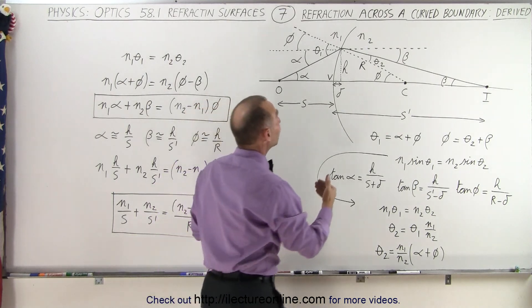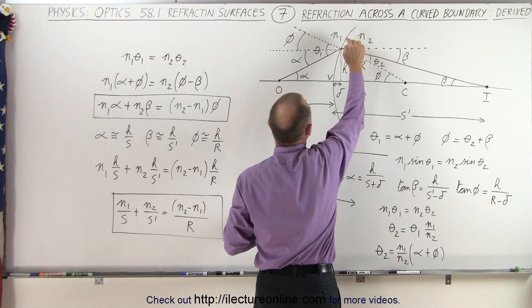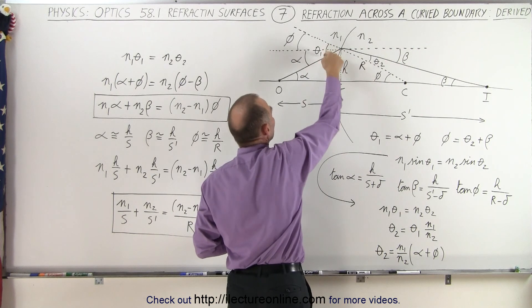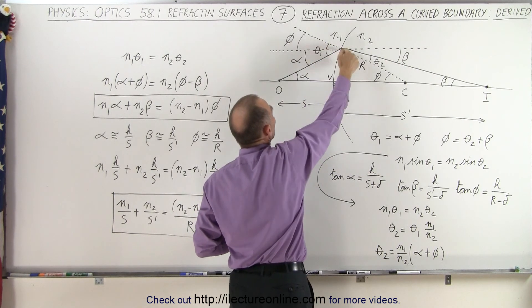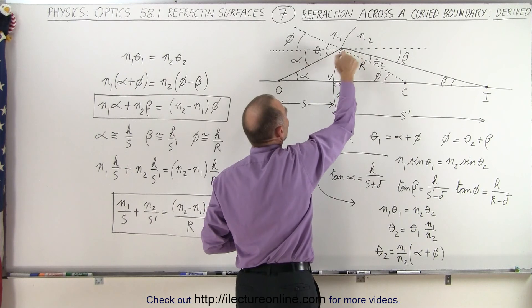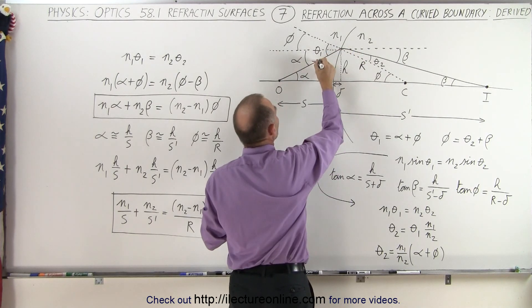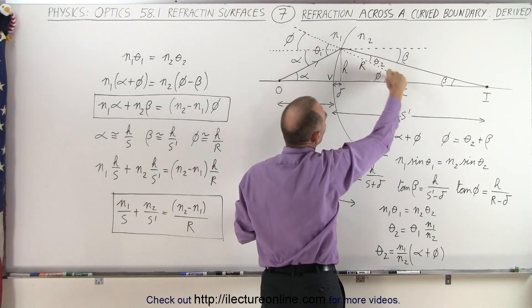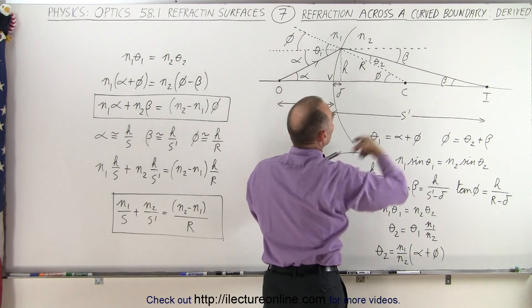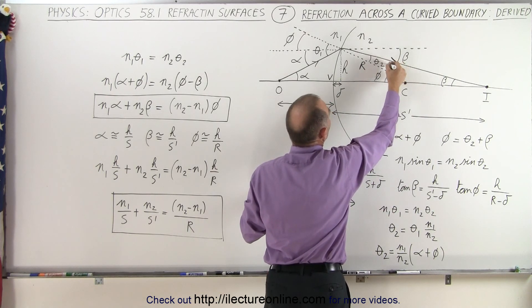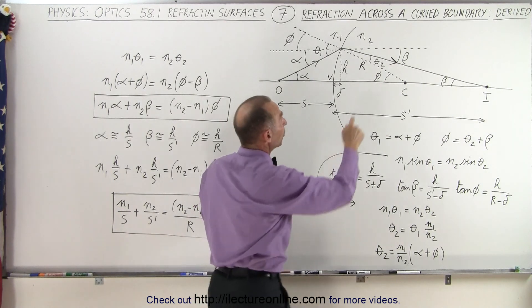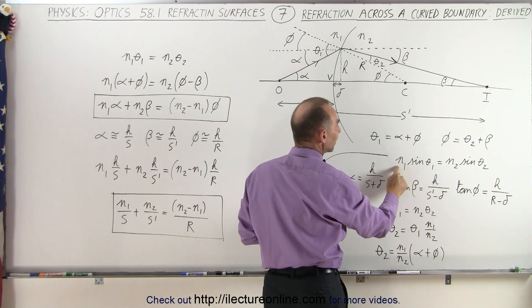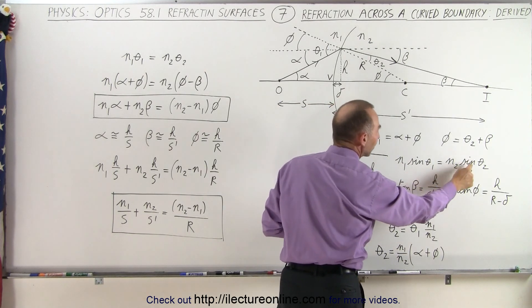If we assume that n2 is larger than n1, the ray will bend towards the normal. Theta sub 1 is the angle between the normal and the incident ray, and theta sub 2 is the angle between the normal and the transmitted ray. We would expect theta sub 2 to be smaller than theta sub 1.